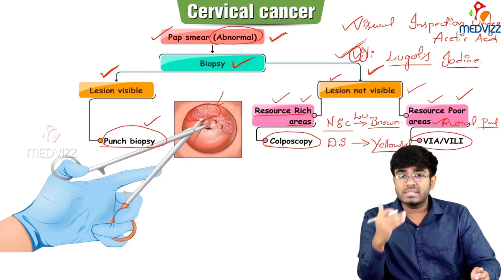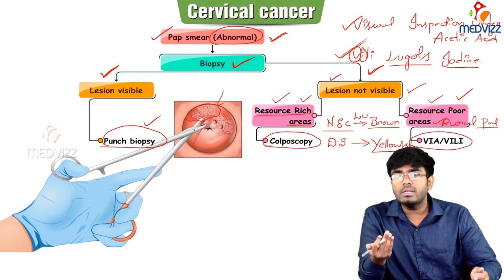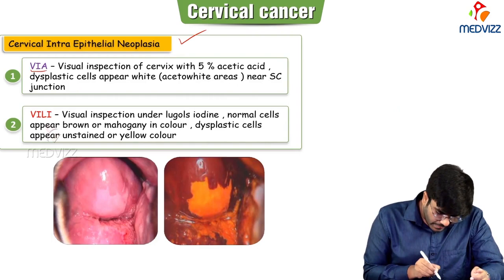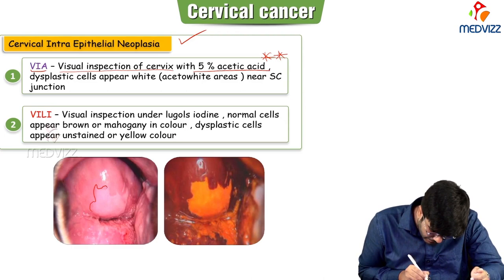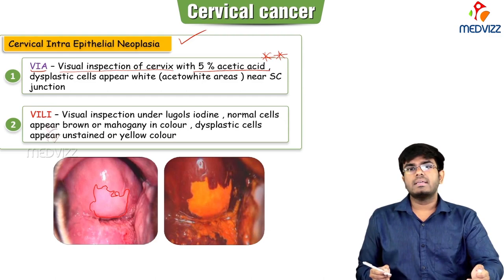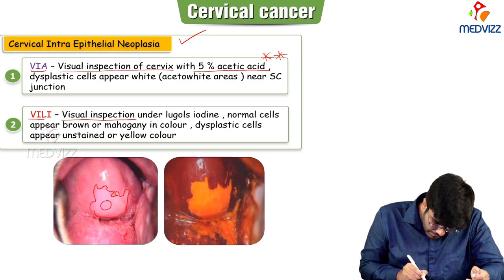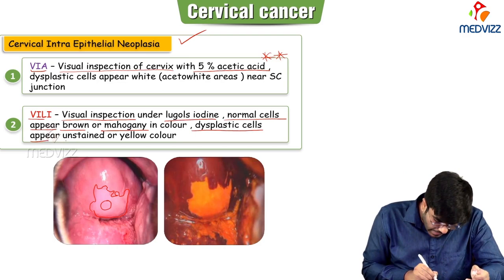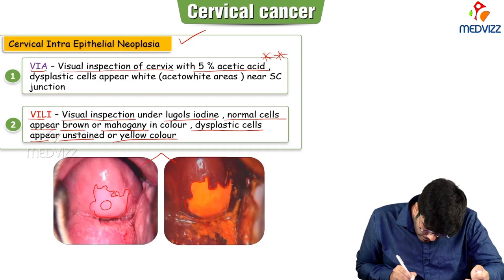Now, different management strategies for different Pap smear results: If the Pap smear result is absolutely normal, continue the Pap smear as per the FIGO guidelines — once every three years. If there is ASCUS — atypical squamous cells of unknown significance — there are some atypical cells whose significance we don't know. In ASCUS, repeat the Pap after six months or one year. If the atypical cells are increasing, do a colposcopic biopsy.